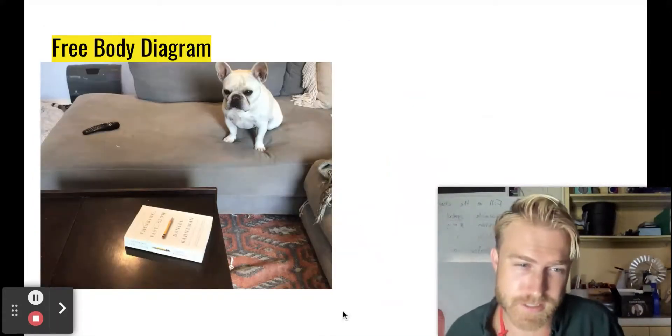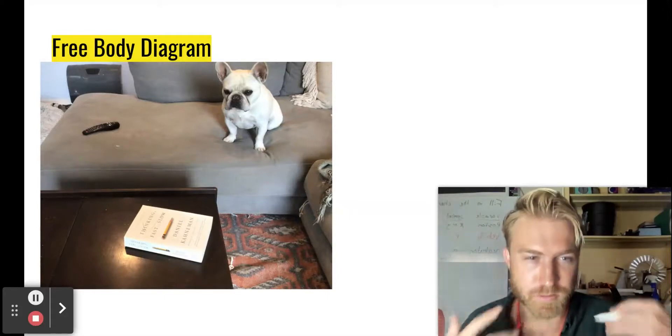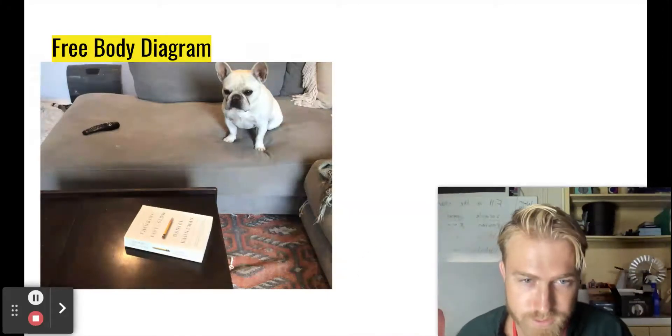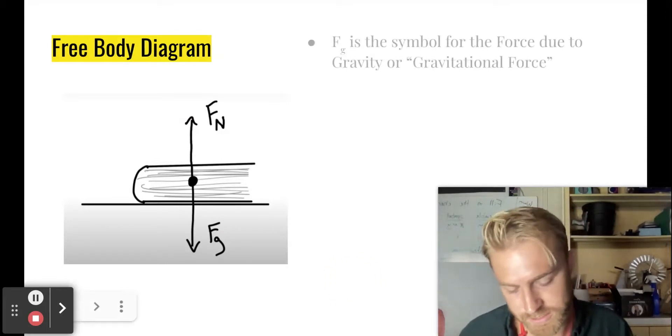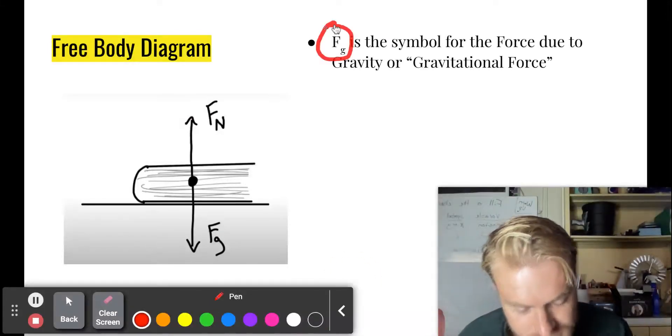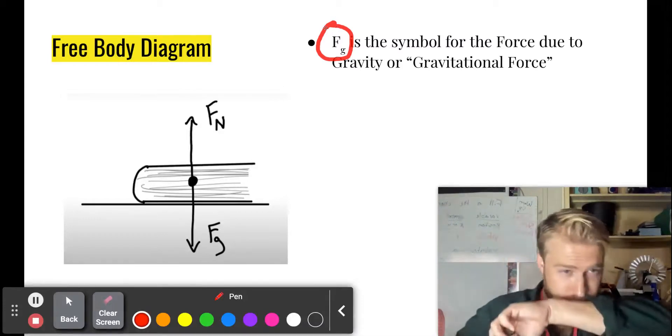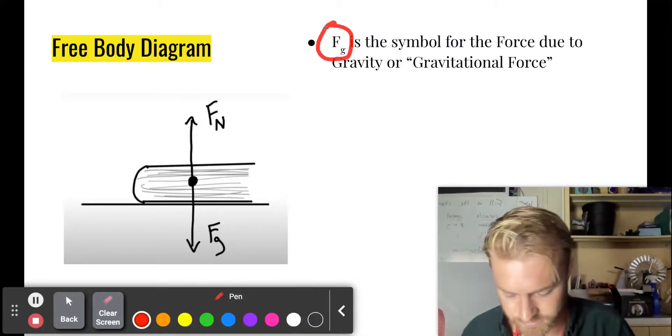So say you want to draw the forces. Here's Frankie. He's looking at this book. He wants to draw the forces on this book. So he draws a free body diagram. And this is what it looks like. This F sub G, that's the symbol for the force due to gravity or the gravitational force.